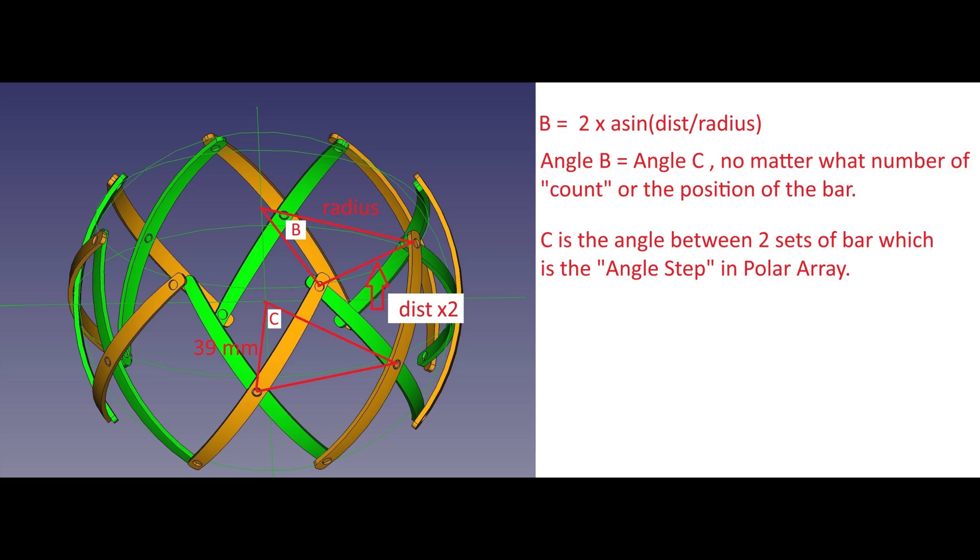By radius and the distance, angle B can be determined. Angle B is equal to angle C, no matter what number of count or the position of the bar.